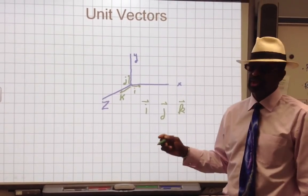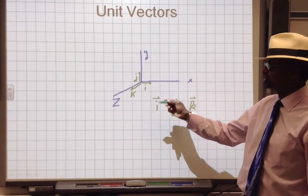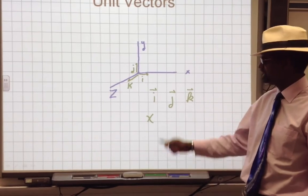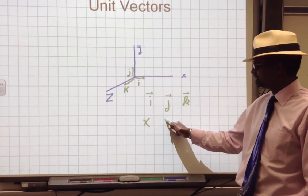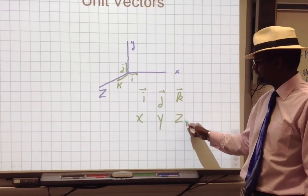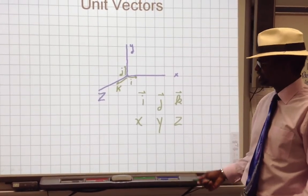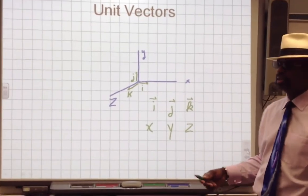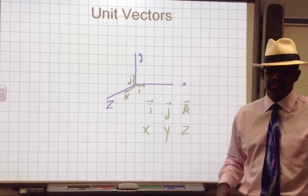A unit vector shows direction. i corresponds to the x direction, j corresponds to the y direction, and k corresponds to the z direction. This is a very simple technique for showing direction without having to say five meters in the x direction, two meters in the y direction.